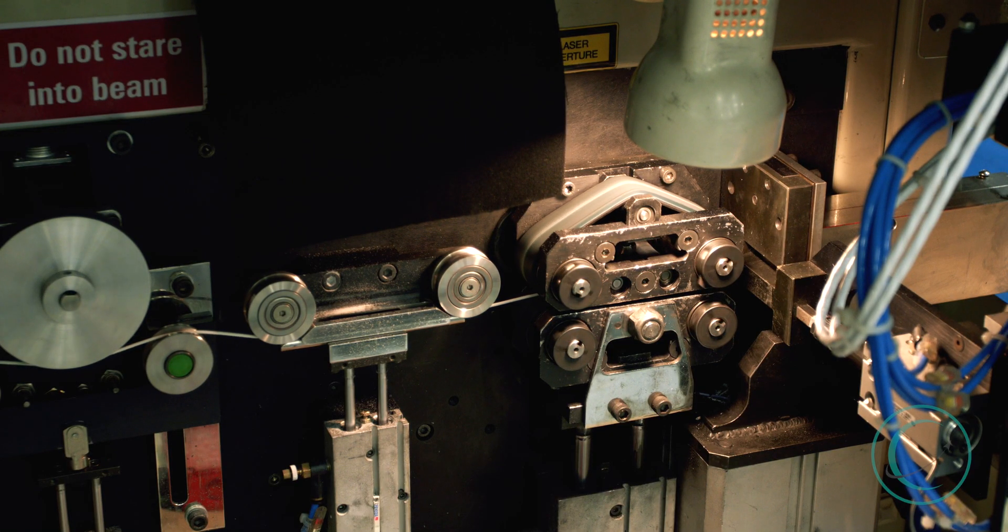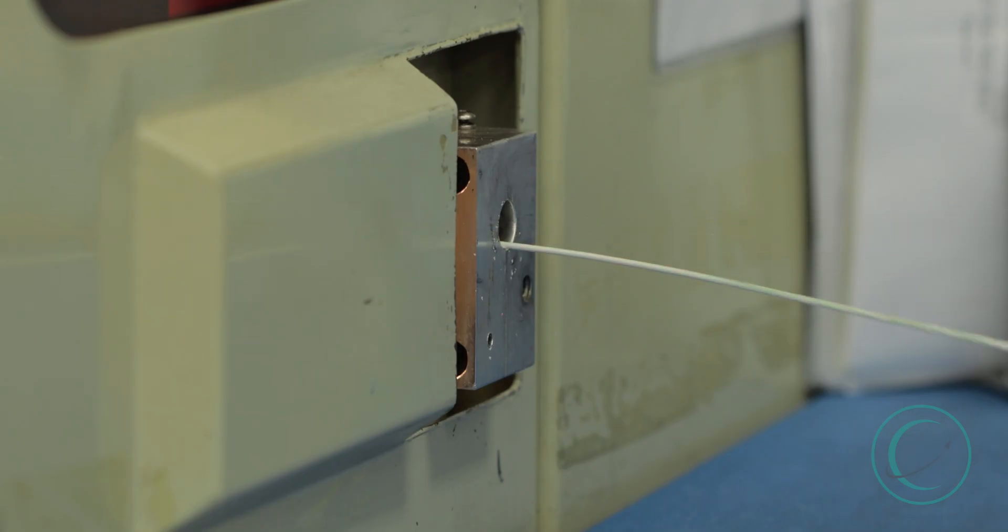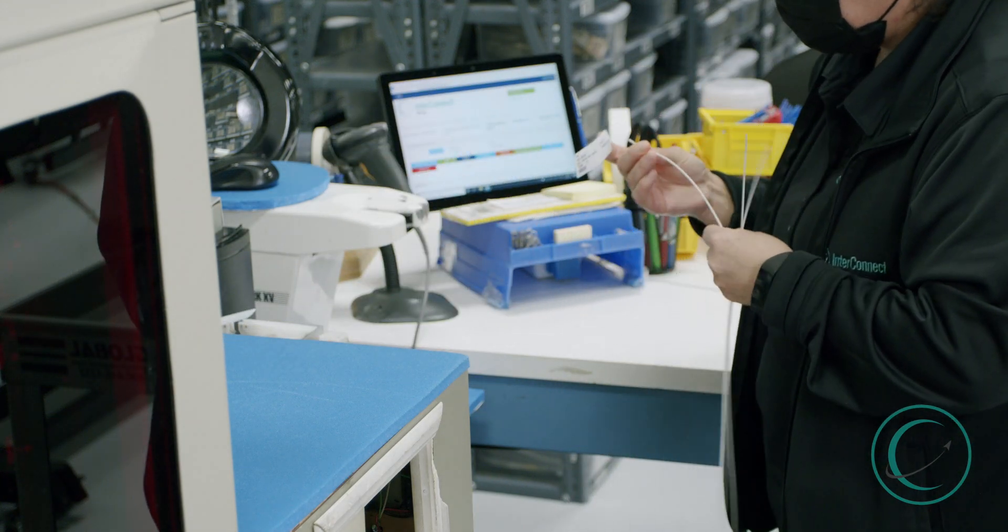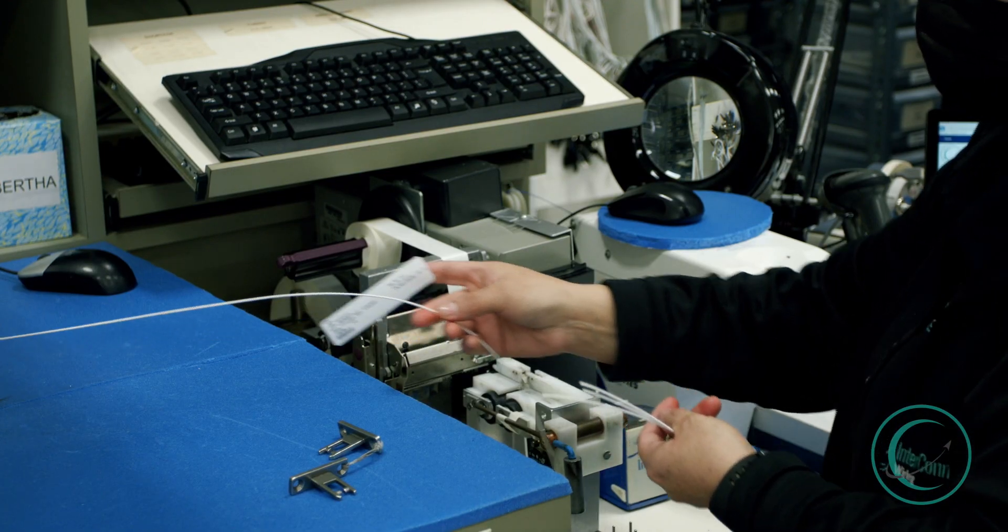This is controlled by our planning department. They determine what the wire marking is based on the engineering that's given to us by our customers, like Lockheed Martin and Boeing. The intervals at which the wire is marked is based on the specifications determined by our customer.